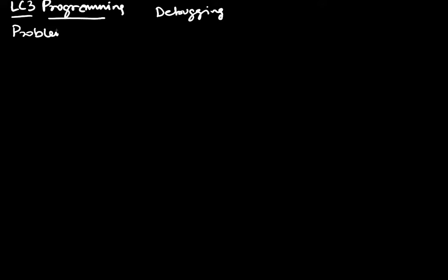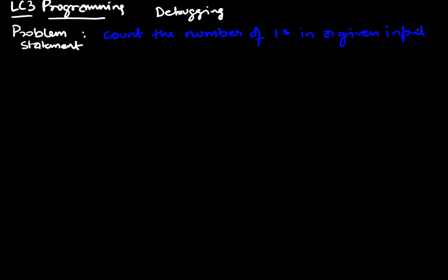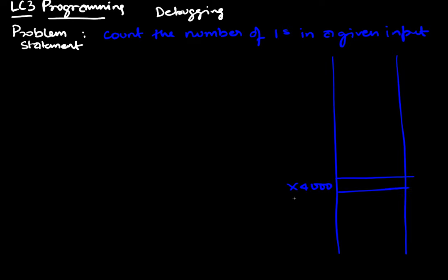The problem I want to work on: we want to count the number of ones in a given input. We assume the input is given at memory location x4000, the program itself will run at x3000, and the count — which is the result — will be returned at x4001. So x4000 is the input and x4001 is the output.